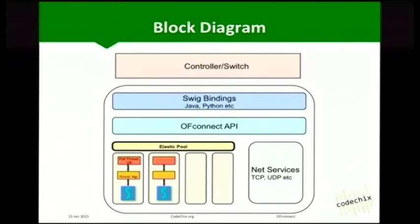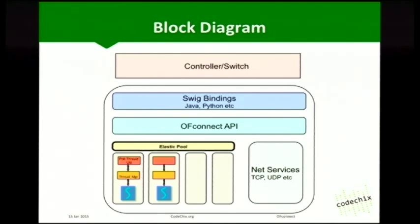This block diagram represents the various components in our library. A controller or switch can be written in C, Java, or Python. Since our API is written in C, we have a small layer of SWIG bindings that export our API in Java and Python. We have three main components: the OF Connect API layer itself, the NetServices component responsible for encapsulating transport protocols, and the elastic pool of threads built to address scalability.